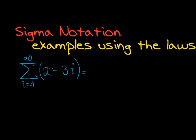Okay, so the first one that I'm going to do is I'm first going to see, well inside here I've got two terms, so I can just split it up into two. So I can have my sum going from my index 4 to 90 of 2 minus the sum of i going from 4 to 90 of 3i.